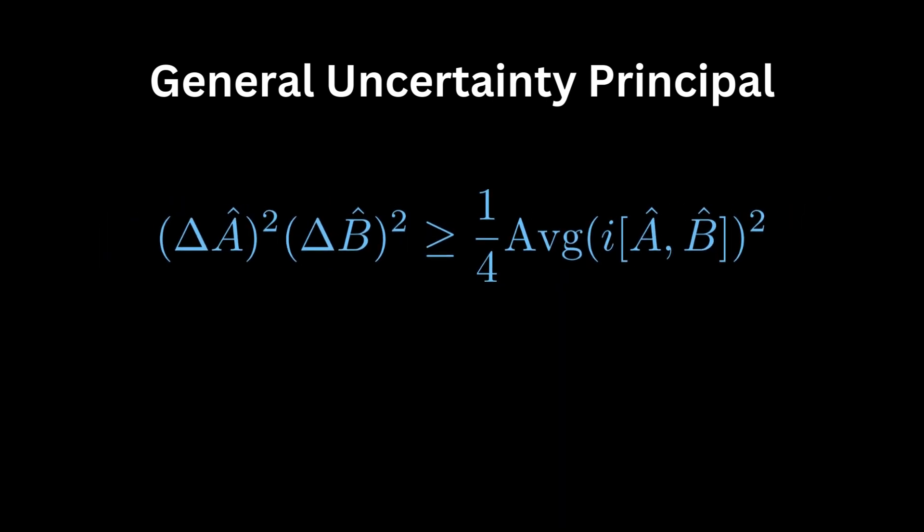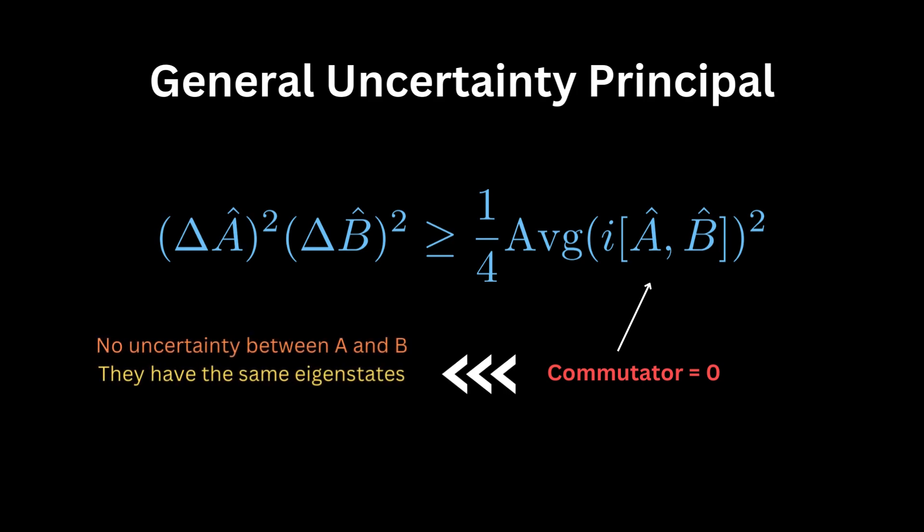The general uncertainty relation between any two operators is in terms of this commutator, and it's defined by the formula. If this commutator was zero, then there is no uncertainty between the operators A and B, and they have the same set of eigenstates. In other words, they don't represent separate and distinct spaces as in the position momentum case.